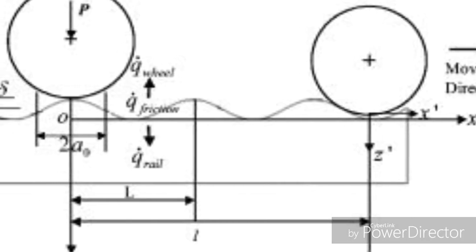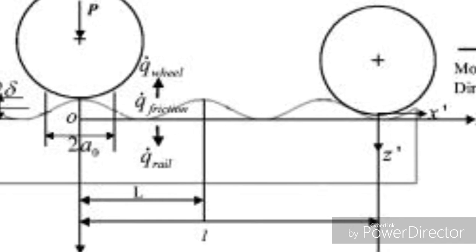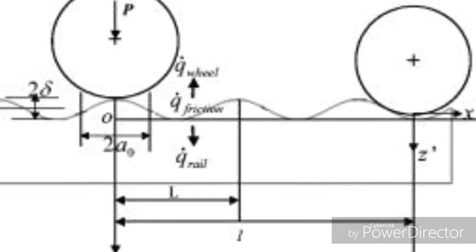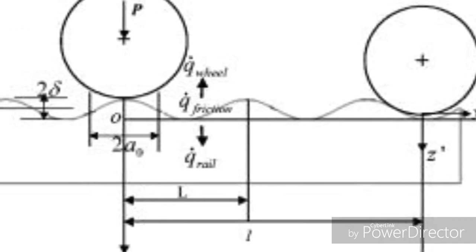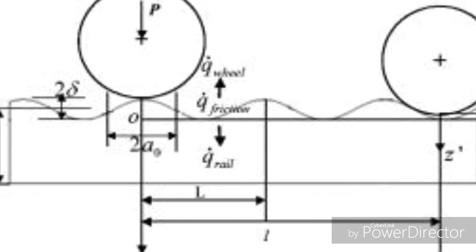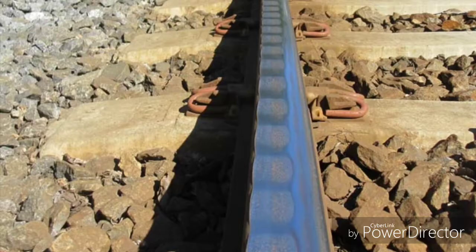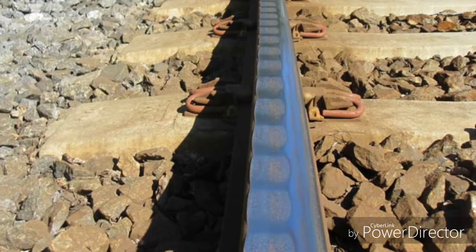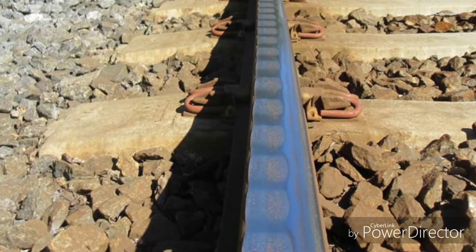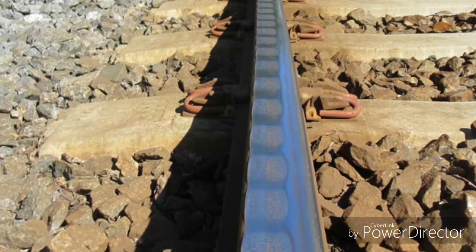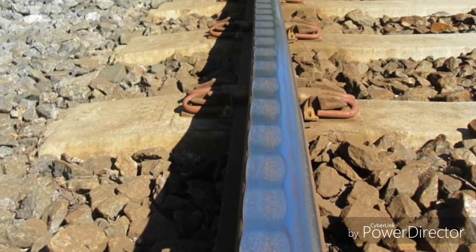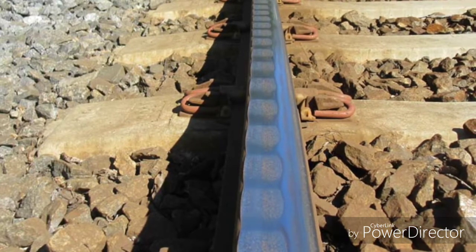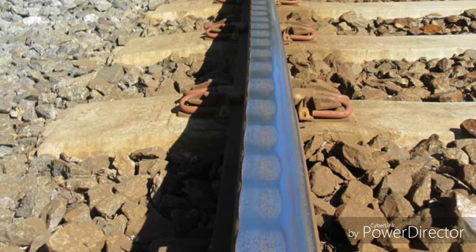The first one is corrugated or roaring rails. In corrugated or roaring rails, in certain places the head of rails are found to be corrugated rather than smooth and straight. When the vehicle passes over such rails, a roaring sound is created. The corrugation consists of minute depressions on the surface of the rail instead of a straight smooth surface.